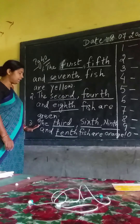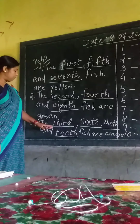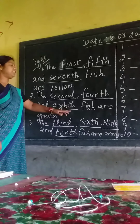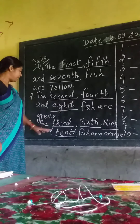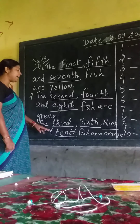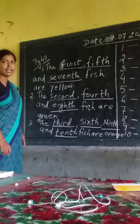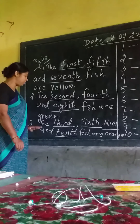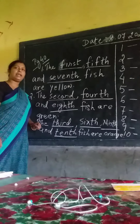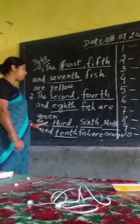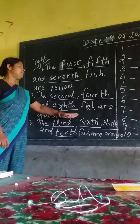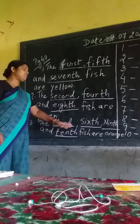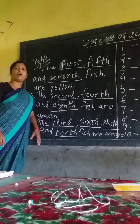Number three: the third, sixth, ninth, and tenth fish are orange. Once again, children, please see — the third, sixth, ninth, and tenth fish are orange.